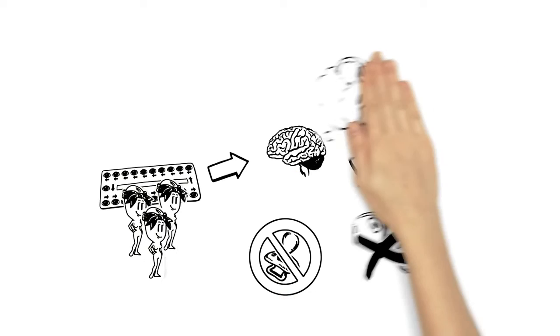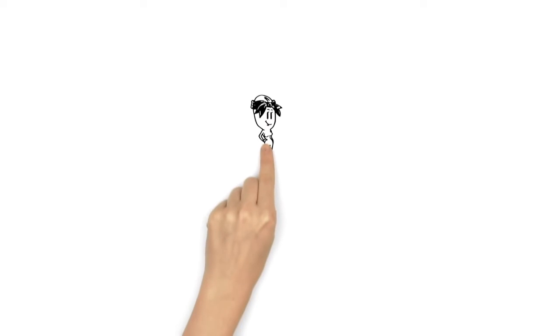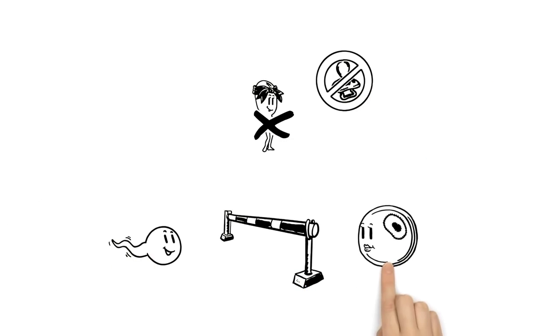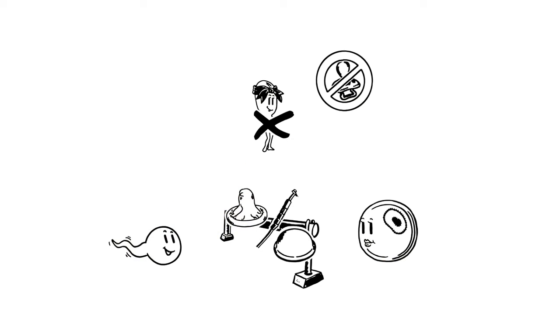But there are also contraceptives that work without hormones. They prevent a pregnancy by stopping the sperm on its way to the egg cell. Condoms, copper coils and the diaphragm work in this way.